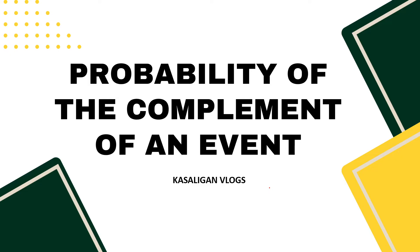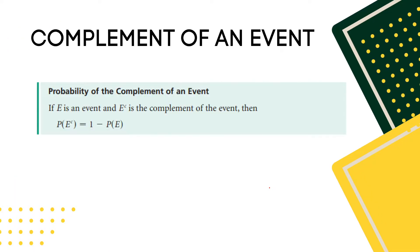Good day everyone, welcome back to my YouTube channel Kasiligan Vlogs. Today we'll be talking about the probability of the complement of an event. If E is an event and E complement is the complement of the event, then P(E complement) is equal to 1 minus P(E). That is how to find this: P(E complement) = 1 minus P(E).